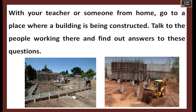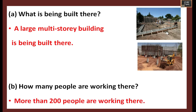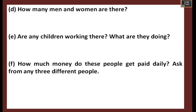With your teacher or someone from home, go to a place where a building is being constructed and find out answers to these questions. What is being built there? A large multi-storey building. How many people are working there? Around 100 to 200. What kind of work are they doing? Some people mix sand and cement, some weld iron rods, some carry construction material, and some operate machines like cranes and bulldozers.